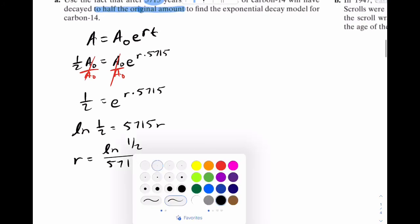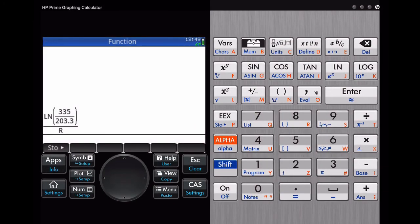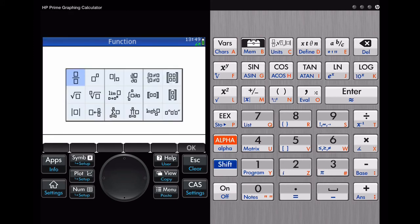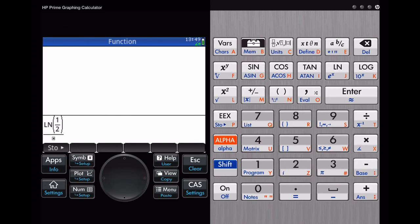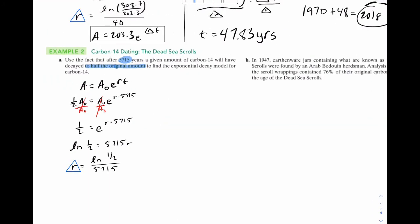And we're going to want to triangle that and put that in our calculator. Fraction, natural log of 1 half, divided by 5715. Get a really tiny number. And store that in R. So there's our stored value. So now the question said we've got to find the model. So the model is going to be A is equal to the initial multiplied by E to the triangle RT. Now that might seem like we didn't do anything, but we have R. So that's why we can actually write that.